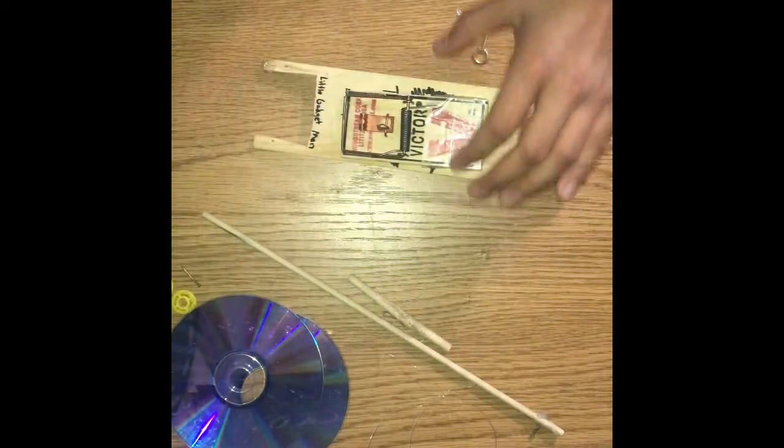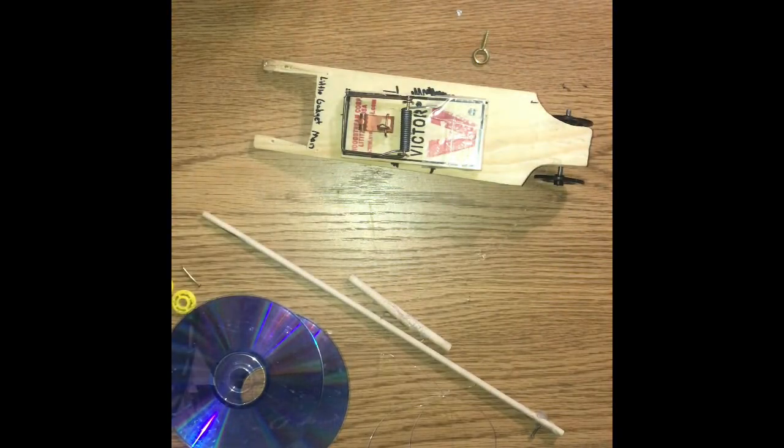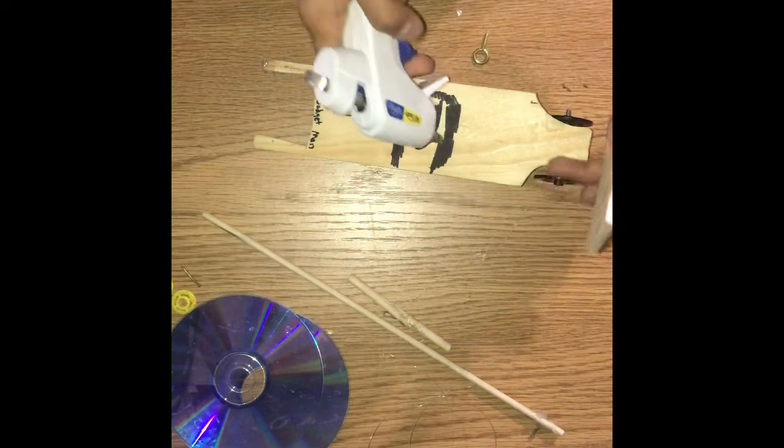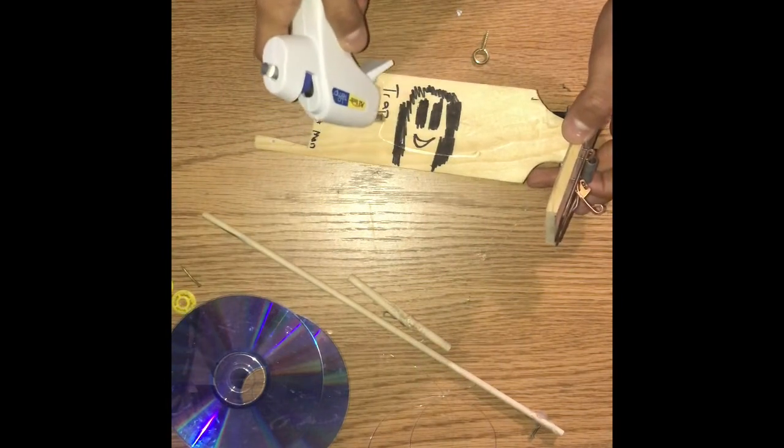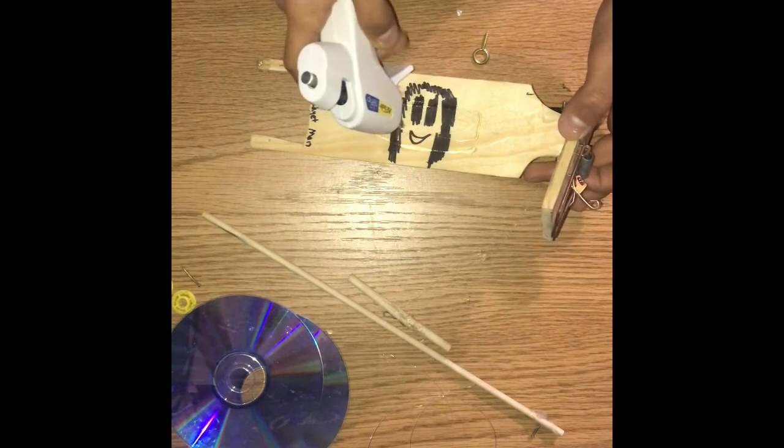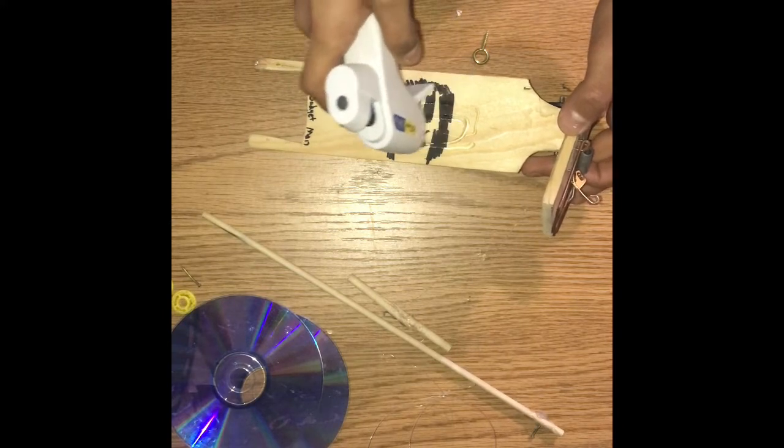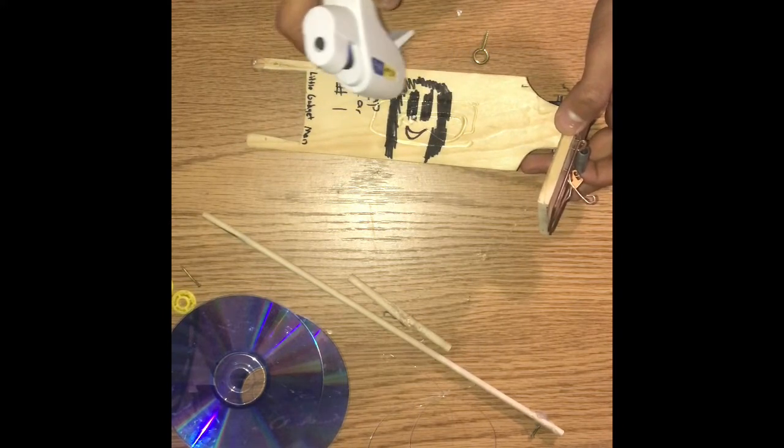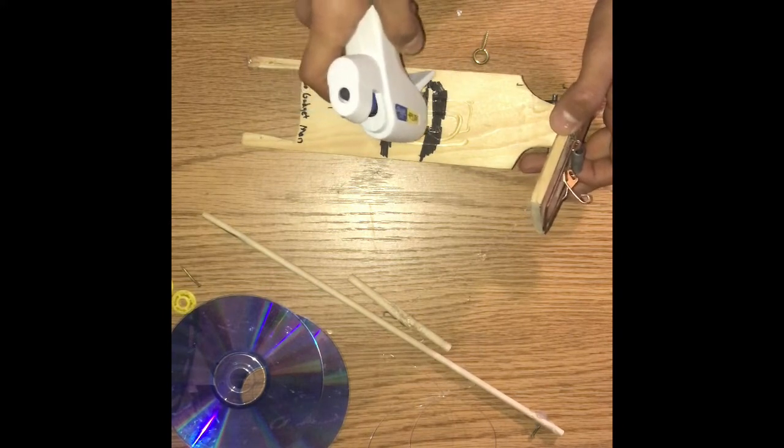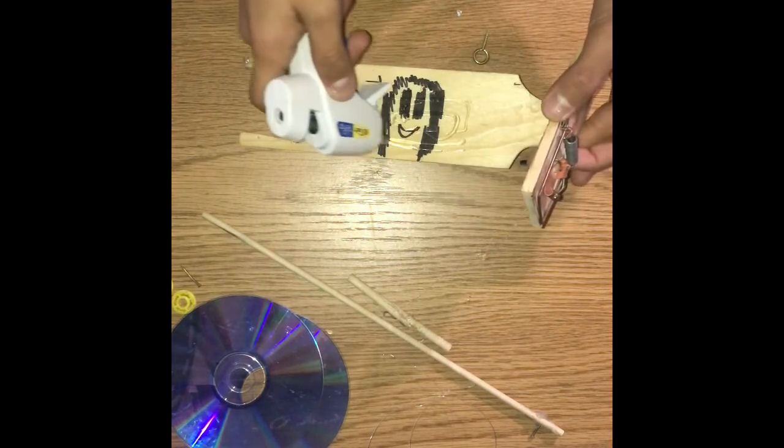Alright, let's put the mousetrap on. Alright, I'm just gonna hot glue the mousetrap on. And then, we are going to be putting on the back wheels. Oh, I'm almost out of hot glue, actually. Alright. I think that's enough. Let me put some in the borders.